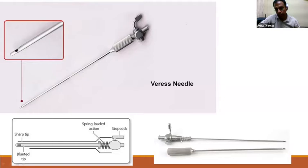This schematic representation shows the Veress needle with its inner stylet, which is spring-loaded. You can see the spring, the stopcock, the blunt tip, the eye, and the outer cannula which is sharp at the tip. When you take out the Veress needle, the inner stylet is blunt while the outer tip is sharp.